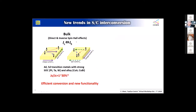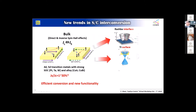Until recently, the bulk spin Hall effect of typically 4D or 5D transition metals has been used to analyze this type of behavior. The important spin Hall angle, which is the efficiency, is varying up to something like 1 to 30%. The trend is now shifting towards interfaces and surfaces — topological insulators and also the Rashba interface.